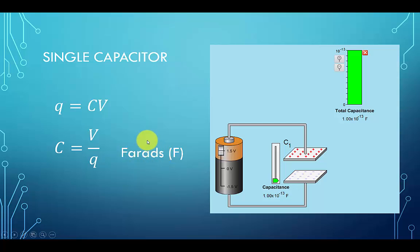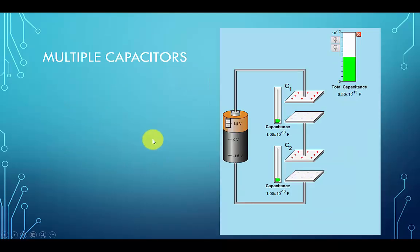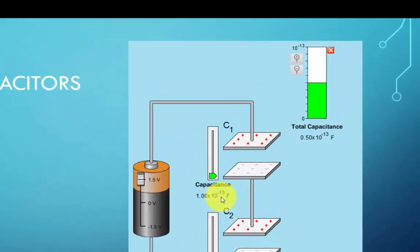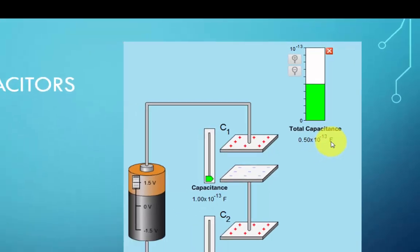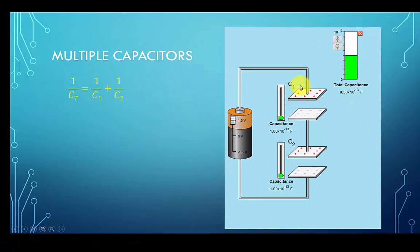Now let's take a look at a combination of capacitors where we have two capacitors C1 and C2 connected in series. Each has a value of 0.1 picofarads and the total capacitance as shown here reads 0.05 picofarads or 0.5 times 10 to the minus 13th farads. Now the formula for this is 1 over Ct, which is the total capacitance. 1 over Ct is equal to 1 over C1 plus 1 over C2.